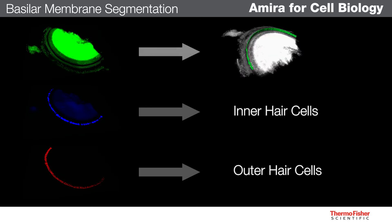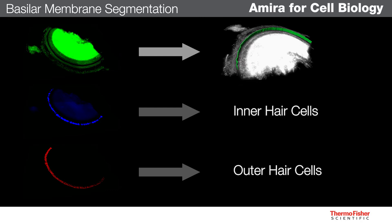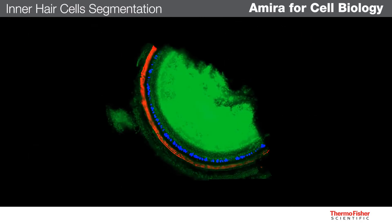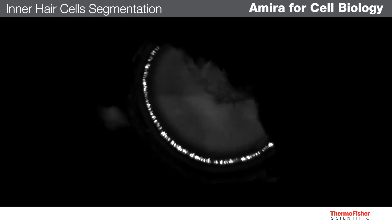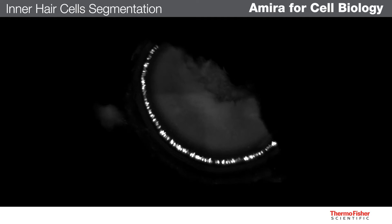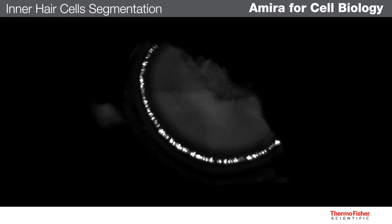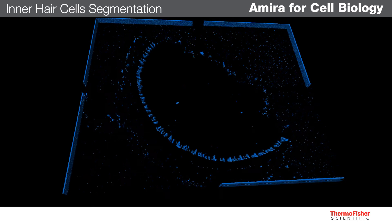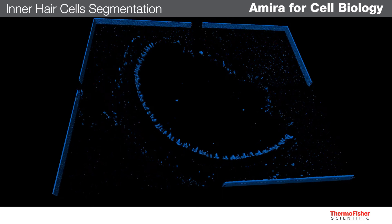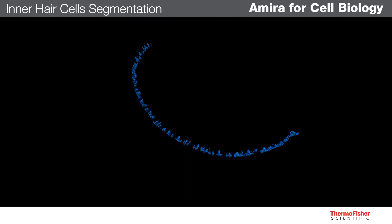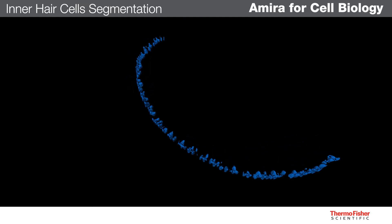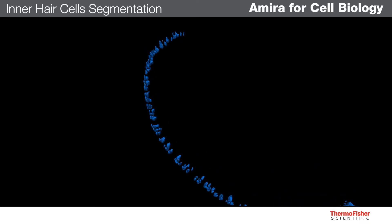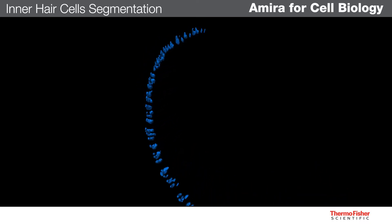Next, we can use the blue channel to segment the inner hair cells. The large inner hair cells are simple enough to segment with a threshold. There is some background signal, however, so we must use a thresholding tool that automatically determines a local threshold for each cell. We can clean up any over-segmentation using a mask generated from the maximum intensity projection of this channel. Some morphological cleaning helps smooth the segmented cells, and watershed separation helps split erroneously connected cells.